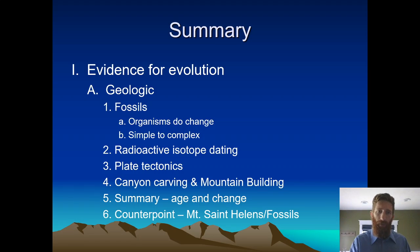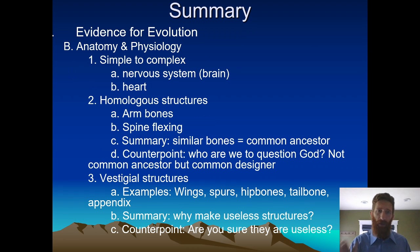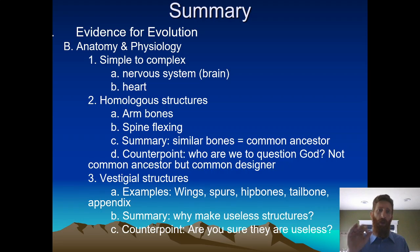So here's our summary slide. Geologic: we talked about fossils, we talked about radioactive isotope dating — which is valid — we talked about plate tectonics and canyon carving. We had our summary and then we had our counterpoint. Then we went into anatomy and physiology: nervous system, heart, simple to complex, homologous structures, arm bones, spine flexing — similar bones equals common ancestor. Counterpoint: who are we to question God? Vestigial structures: wings that are degenerate and don't help them fly, whale hip bones, tailbone, appendix — why would a creator make useless structures? It speaks to more of a random process. Counterpoint: are we sure they're actually all useless?